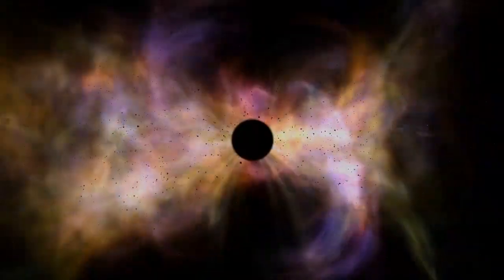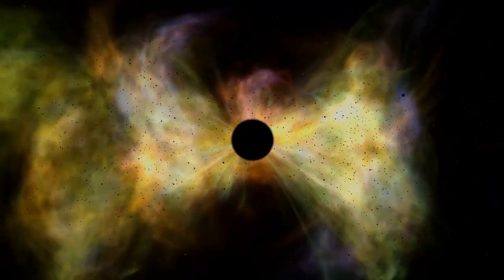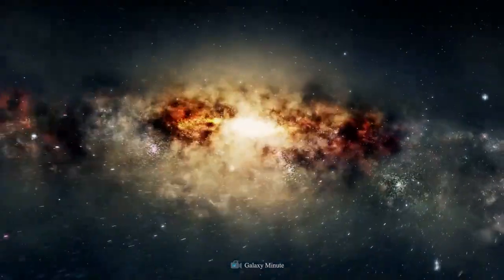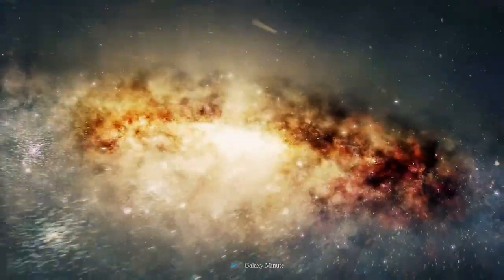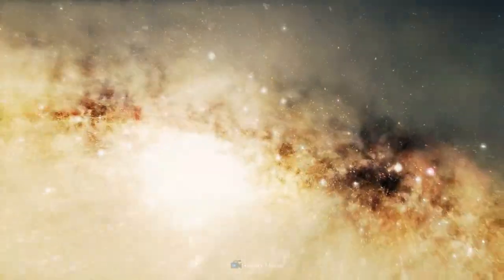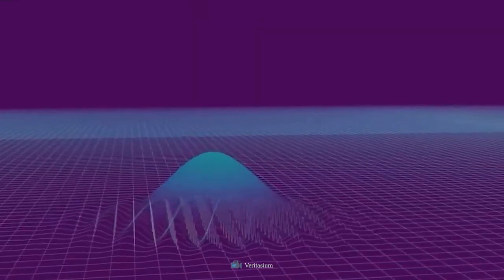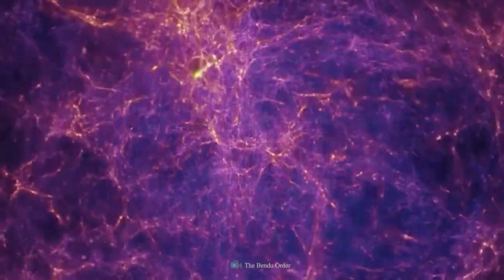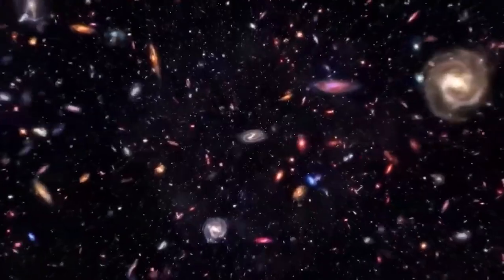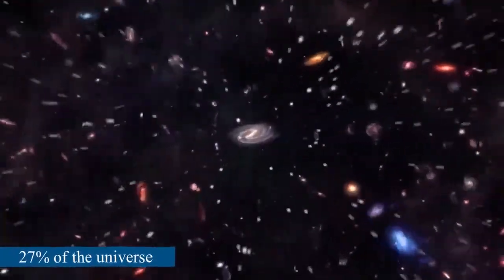Unlike normal matter, dark matter doesn't interact with the electromagnetic force. Since it doesn't react to light in any way, either by absorbing it, reflecting it, or giving off any, it's nearly impossible to detect. Scientists have only been able to deduce the presence of dark matter based on the gravitational influence it appears to have on regular matter. Dark matter seems to have about six times as much mass as visible matter. It makes up about 27% of the universe.